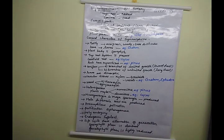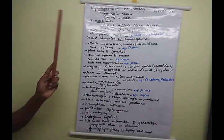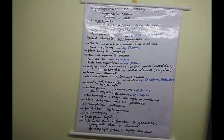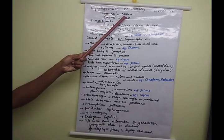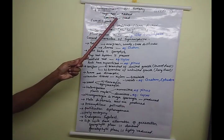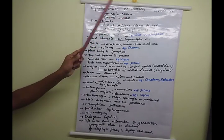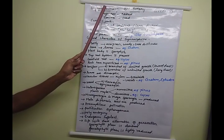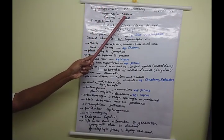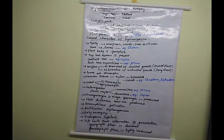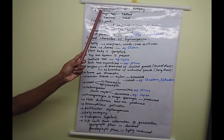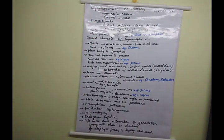Today we are moving to the next plant group — gymnosperms. 'Gymno' means naked and 'sperm' means seed, so the total meaning is naked seed producing plants. Plants that produce naked seeds are called gymnosperms.